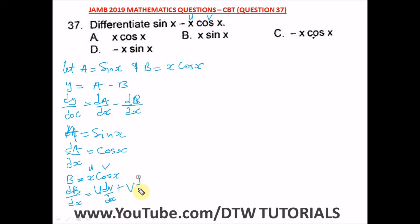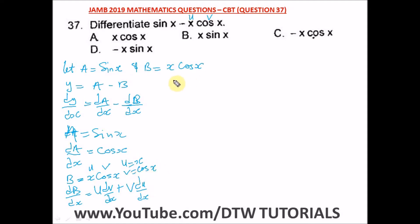Let's put in these values. u is equal to x and v is equal to cos x. So from here, db/dx is equal to u — which is x — times dv/dx.